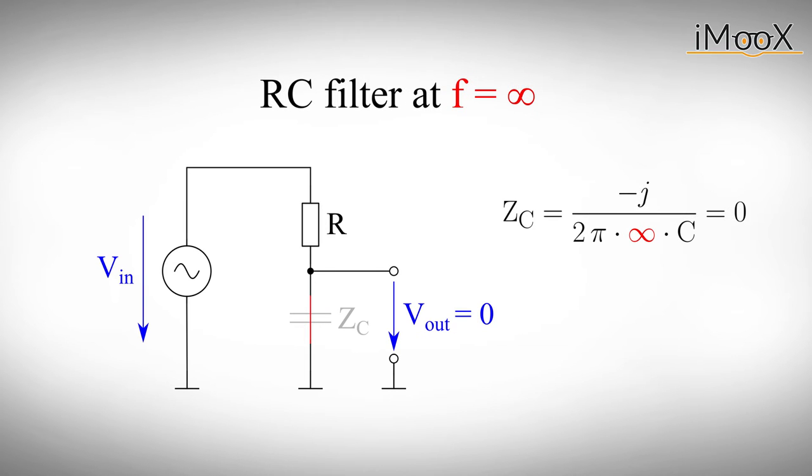For the other extreme, if the signal frequency is close to infinity, the impedance of the capacitor will drop to zero. We can therefore think of the capacitor as a short circuit. The output voltage is pulled to ground and will therefore be zero.